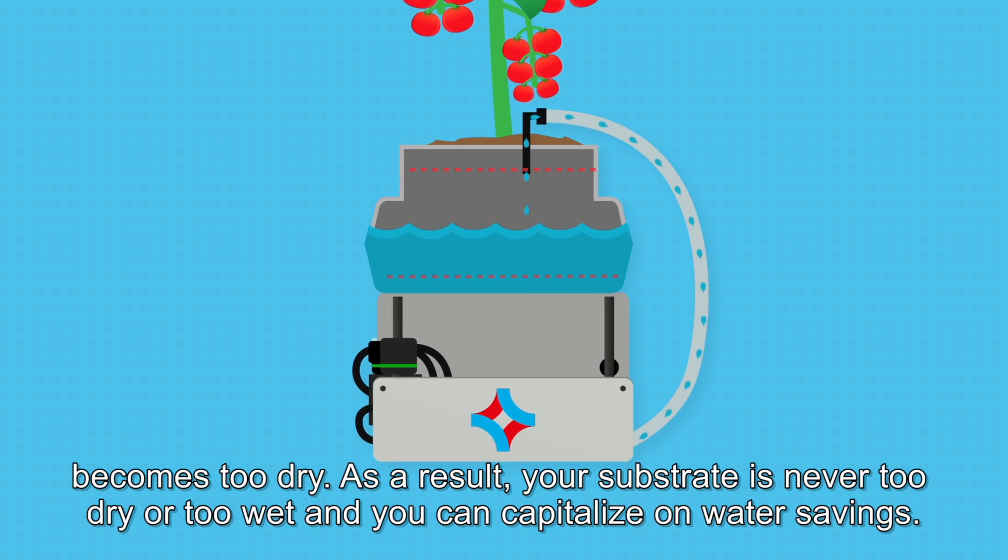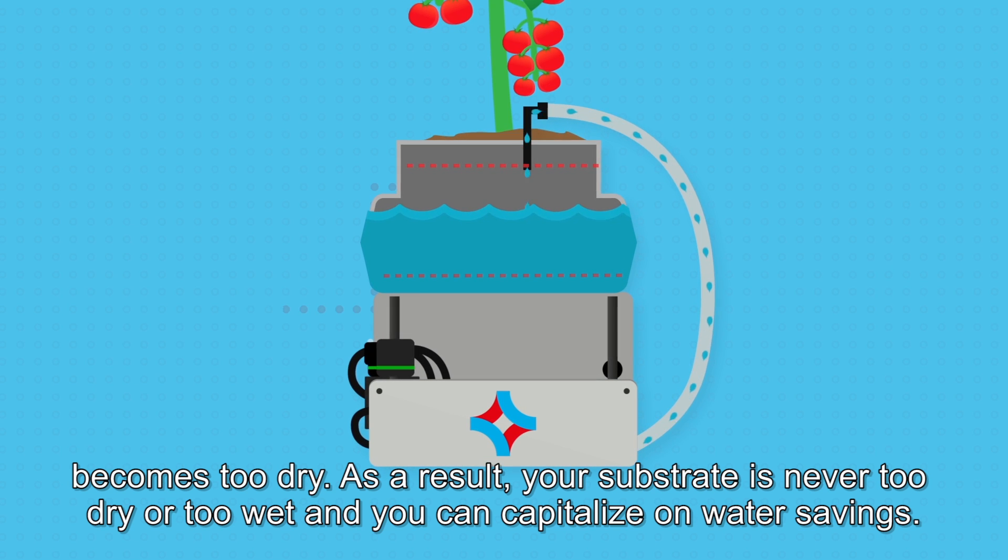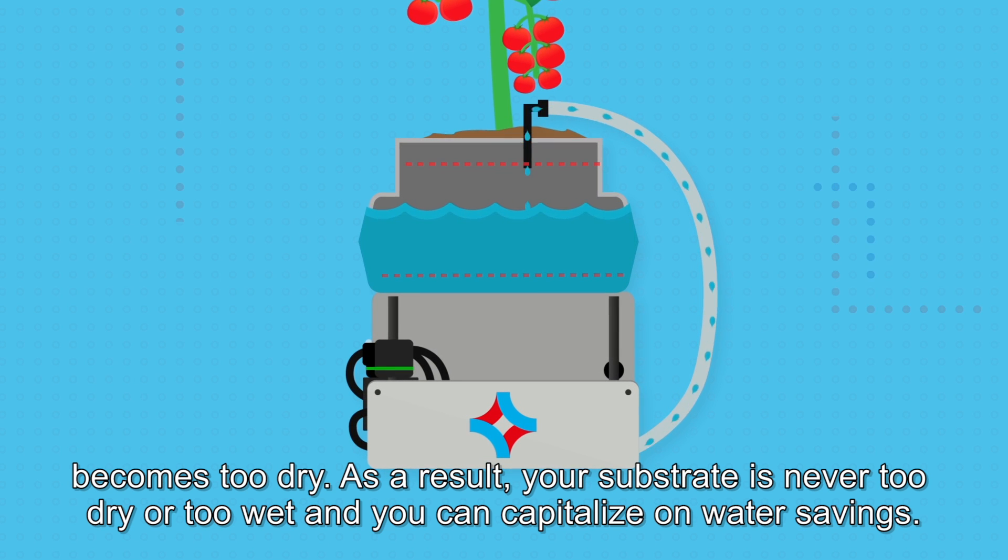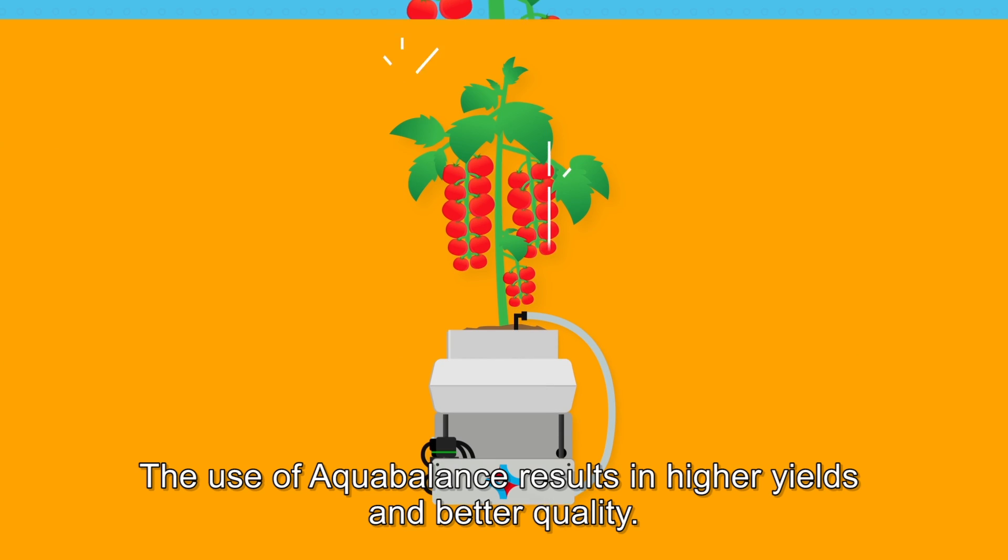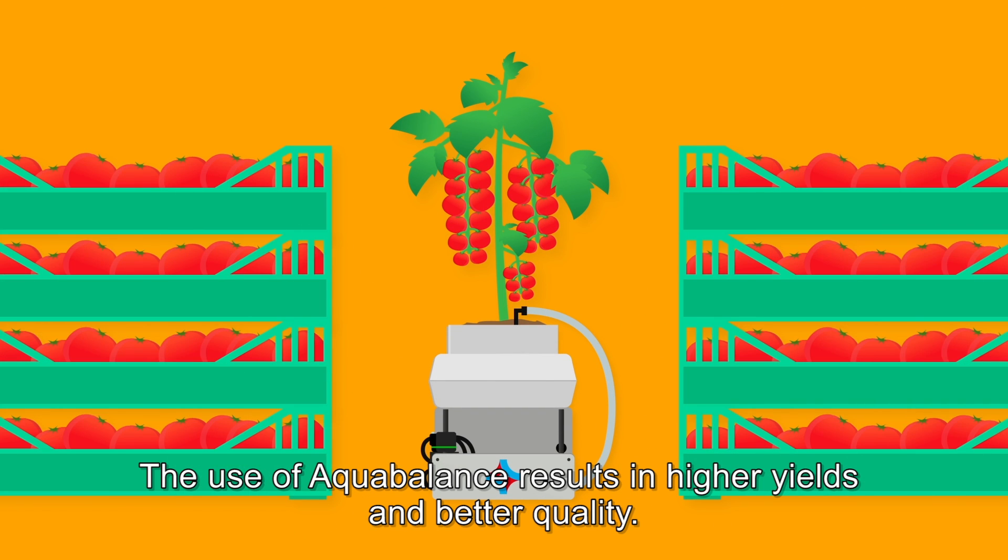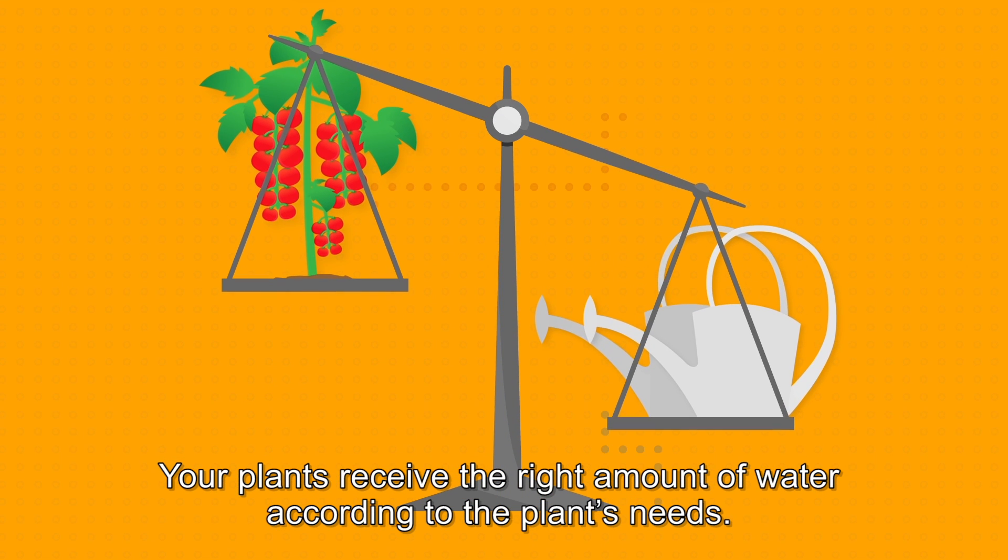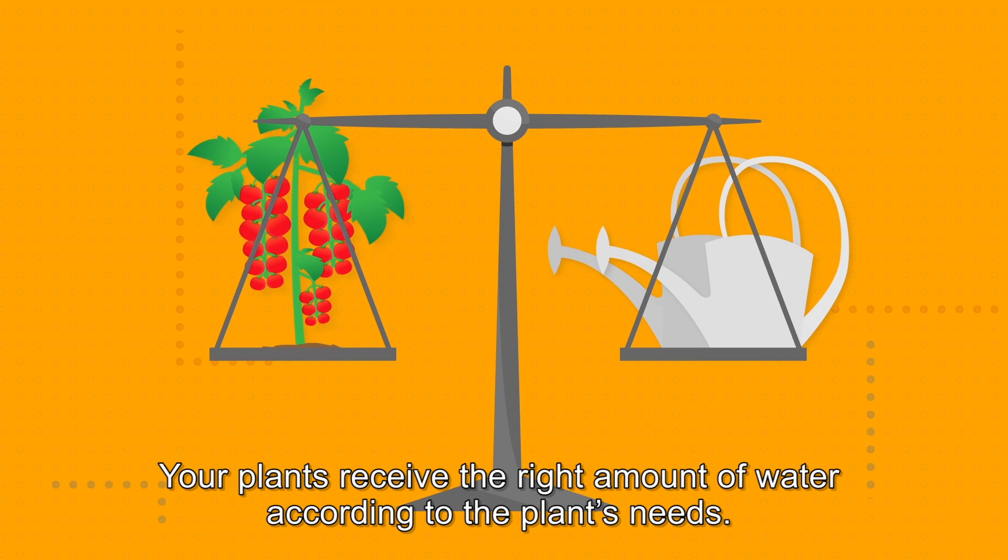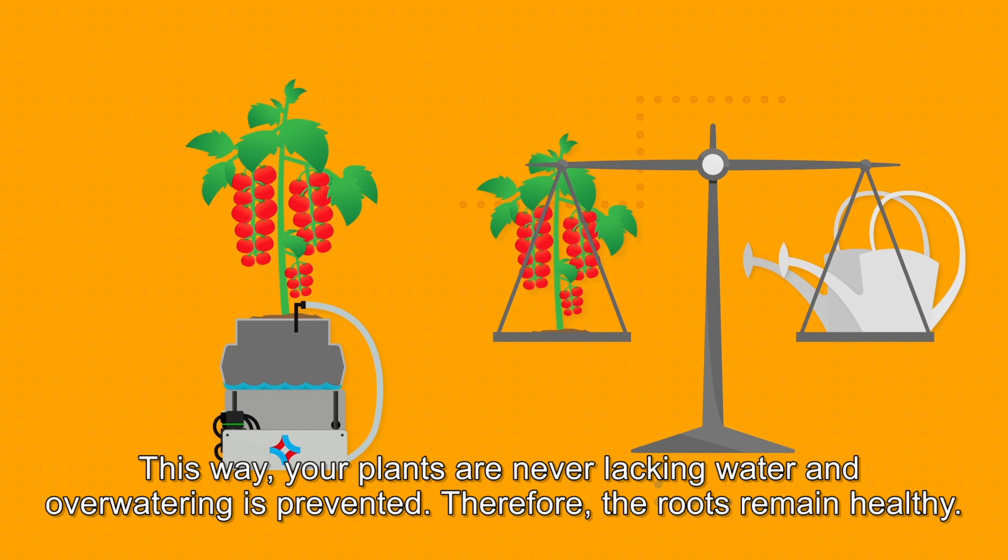As a result, your substrate is never too dry or too wet and you can capitalize on water savings. The use of Aqua Balance results in higher yields and better quality. Your plants receive the right amount of water according to the plant's needs. This way, your plants are never lacking water and over-watering is prevented, therefore the roots remain healthy.